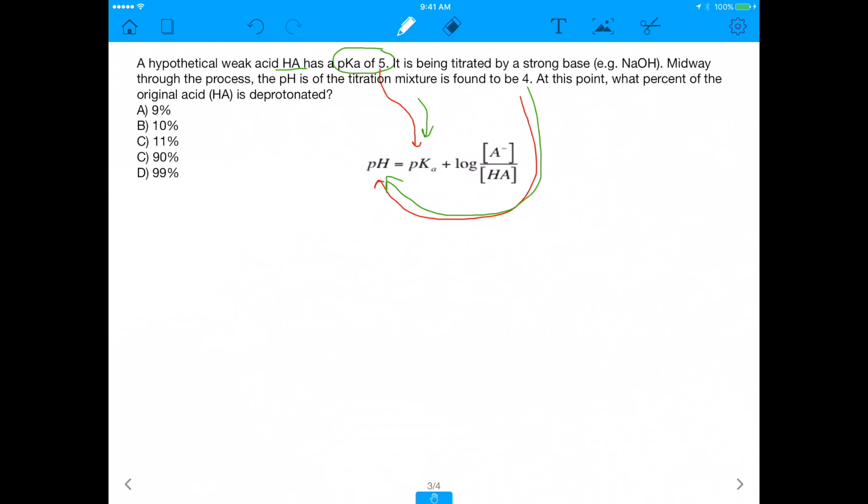So if we did that, we get 4 is equal to 5 plus log of A minus over HA. That's what we would get. Now let's simplify this. Because now we get negative 1 is equal to log of A minus over HA. That's a simplified version of that equation.